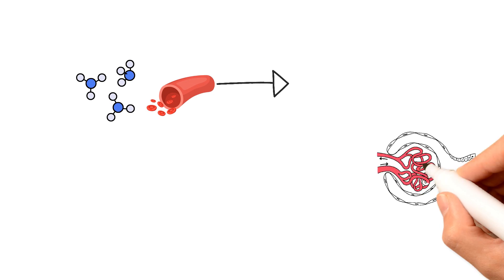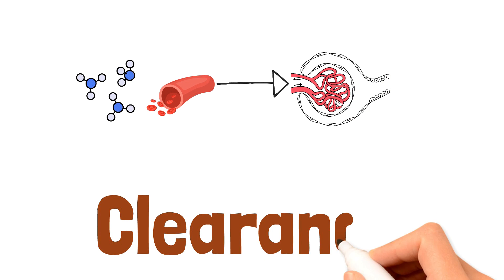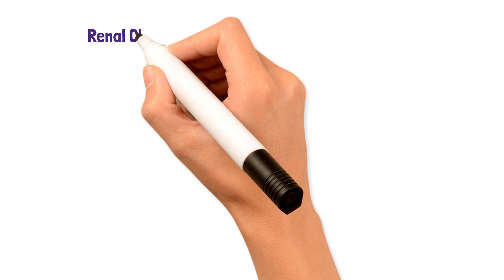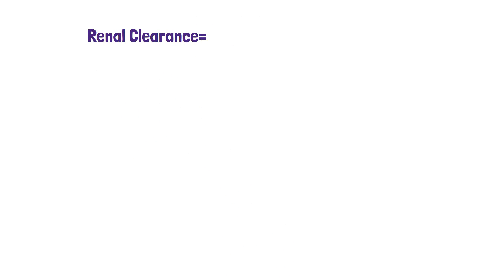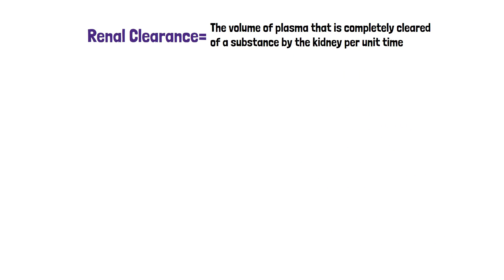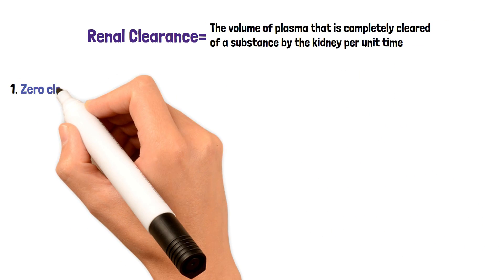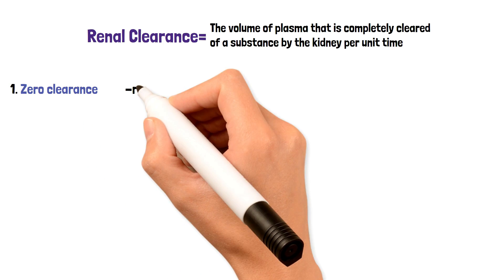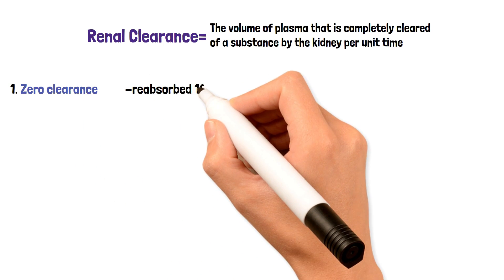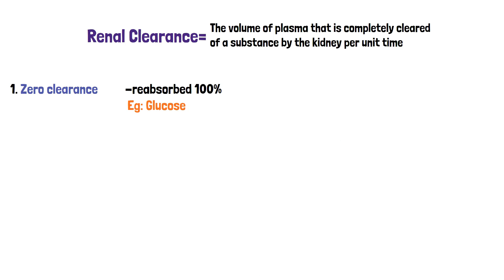To measure the GFR, we can choose a molecule in our body and measure how fast it is cleared from the serum — this is known as clearance. Renal clearance is the volume of plasma completely cleared of a substance by the kidney per unit time. There are three types: zero clearance is when a molecule is freely filtered but also reabsorbed 100%, for example glucose.